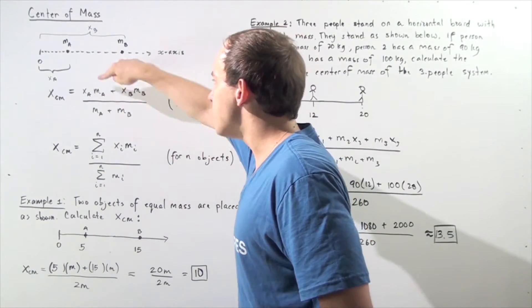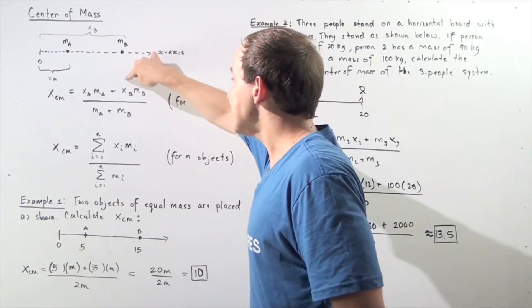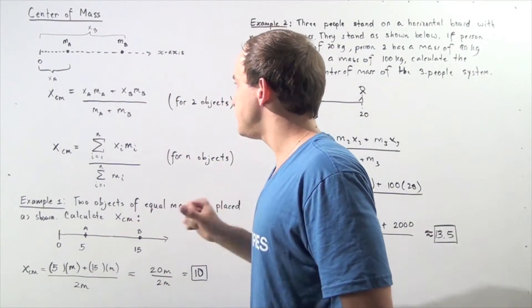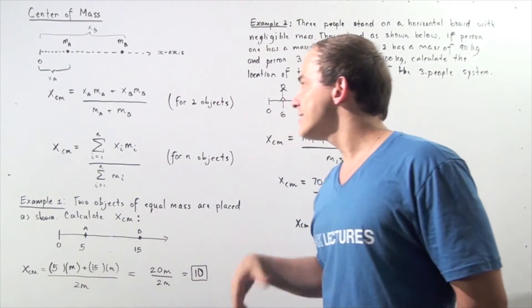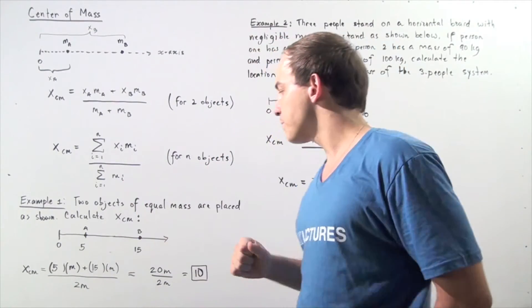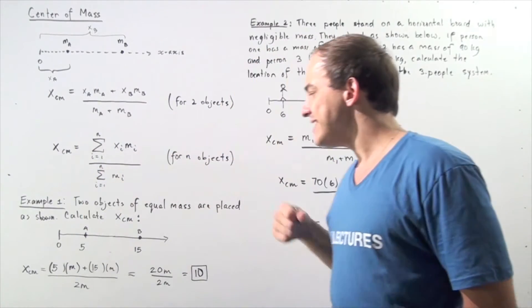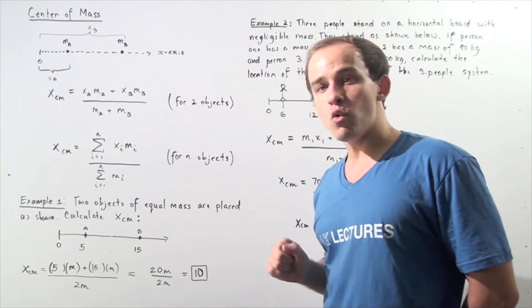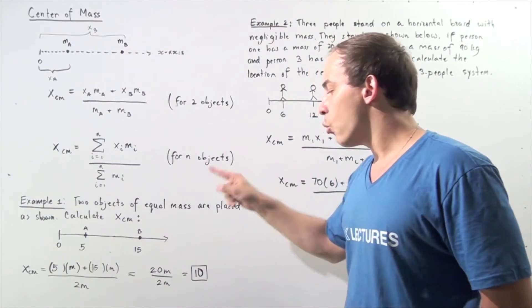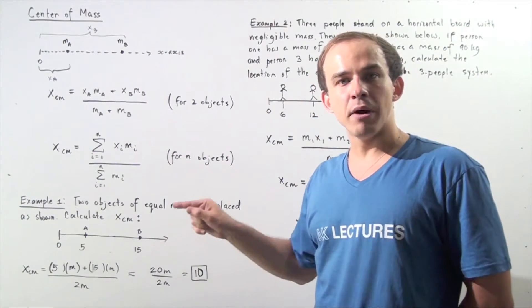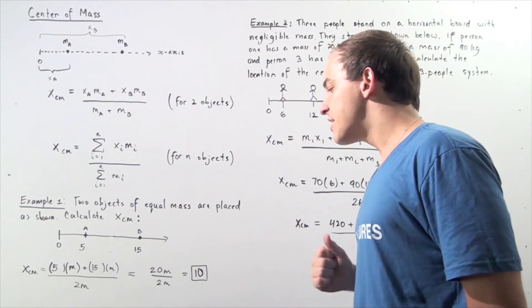Using the formula: xA is 5, MA is M, plus xB is 15, MB is M, and the denominator is M plus M, which is 2M. We're left with 20M divided by 2M. The M's cancel, and we get 20 divided by 2, which equals 10.